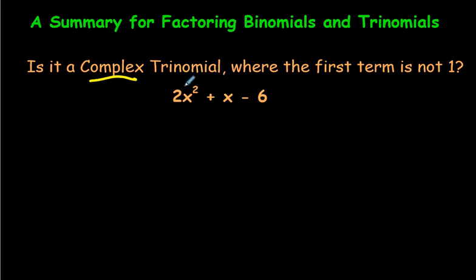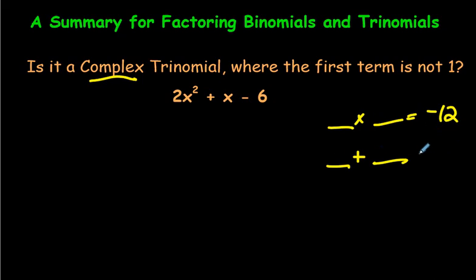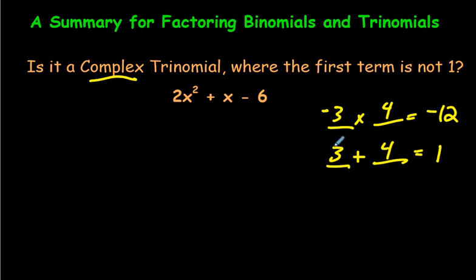For either decomposition or the box method, you multiply the first and the last term: 2 times negative 6 gives us negative 12. We're thinking of two numbers that multiply to make negative 12, and when added give the middle term, which is 1. We know 6 times 2 is 12 but that'll never make 1, so 3 and 4 are a better option. Since we have negative 12, we choose negative 3 and 4: negative 3 times 4 is negative 12, and negative 3 plus 4 is 1. Decomposition splits this middle term into two parts.